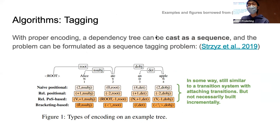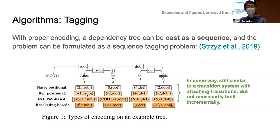Interestingly, with proper coding a dependency tree can be encoded as a sequence, and we can do sequence labeling for parsing. One paper describes several encoding conventions where the head position is encoded as a relative position — for example, plus-one means the head is one position to the right, with the relation 'nsubj.' In this way the whole tree is compressed as a sequence of labels and we can apply sequence labeling to it.